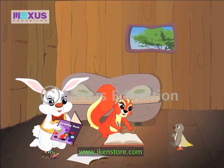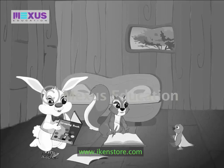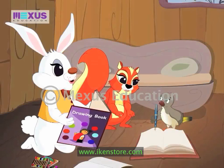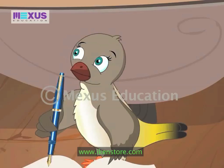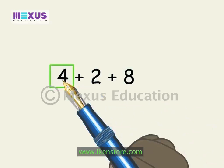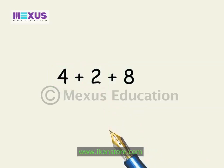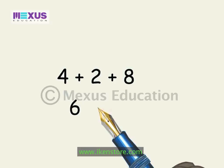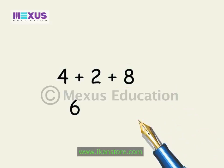Mr. Sparrow, can we add only 2 numbers? Why can't we add 3 numbers? Of course it can be done, Amber. Let's add 3 numbers. Suppose the 3 numbers are 4, 2 and 8. Let's add them horizontally first. Start with adding the 1st and 2nd number. So, what should be the answer, Amber? 4 plus 2 is 6. Yes, you are right. Now, remember the answer or write it down. Now, add the answer to the 3rd number. Bunny, can you help? Oh, sure. 6 plus 8 is 14.